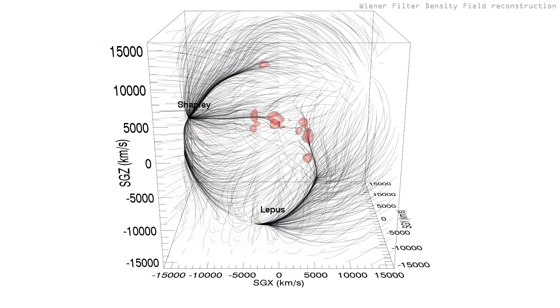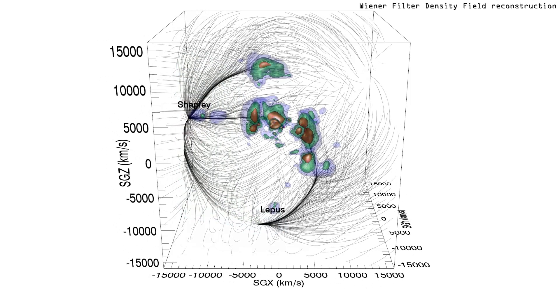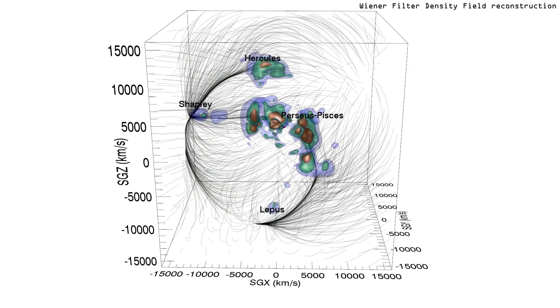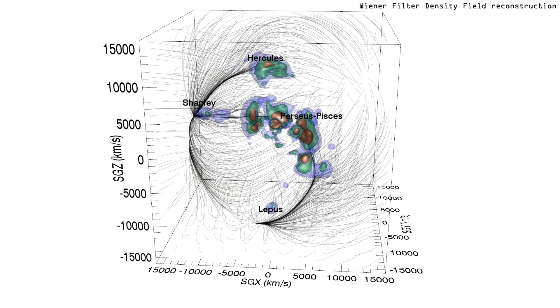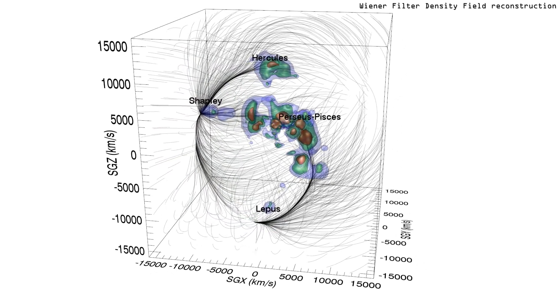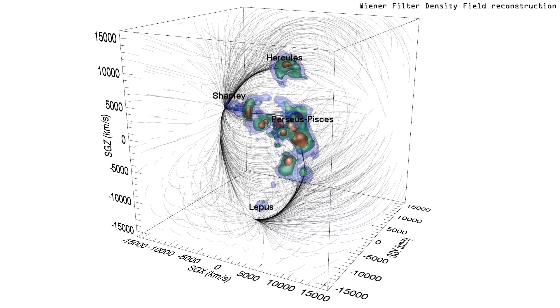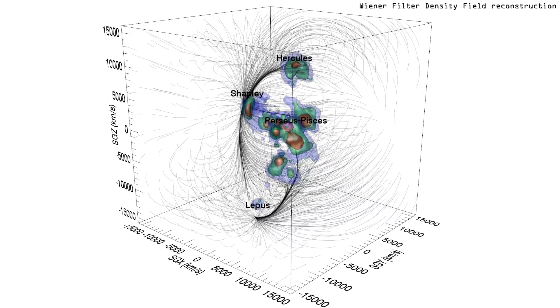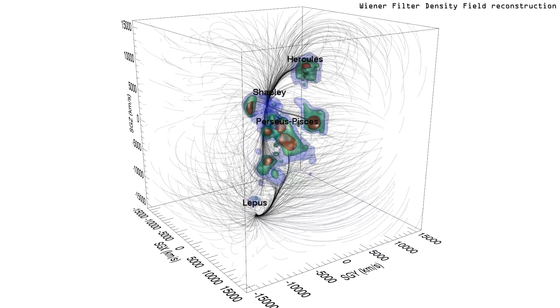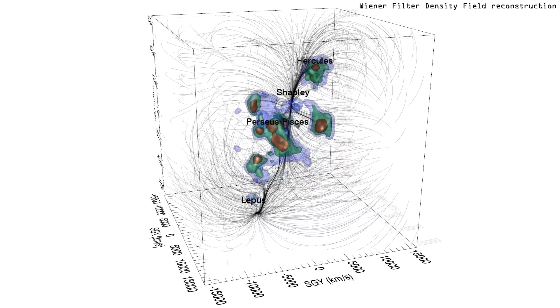Contours transition to the Wiener filter over density field. Contours are prominent near the center, where the peculiar velocity information is dense and accurate, but diminishes at large distances from the center, where information is sparse and uncertain.